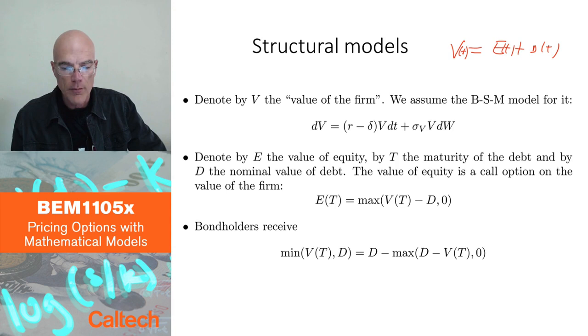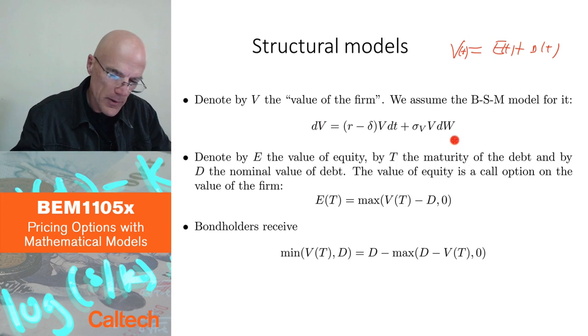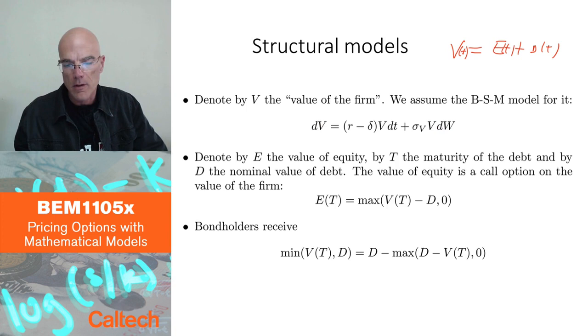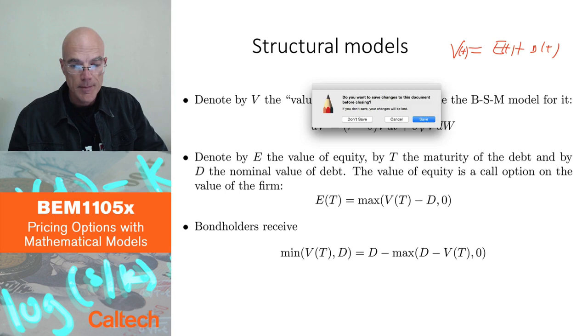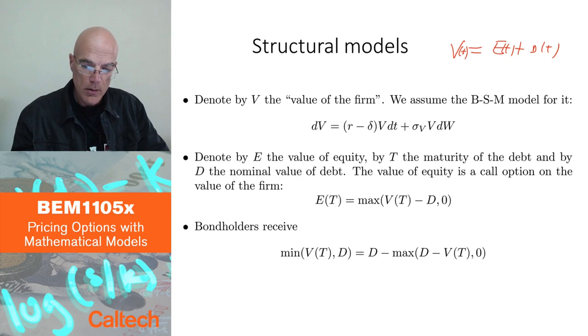So it's kind of an economically nice and intuitive idea for pricing corporate, corporate meaning defaultable bonds. There are problems other than just this being kind of a too simplistic way of view of bankruptcy. There is also a problem that you don't actually observe V. The value of the firm is not directly observable, and it's not quite easy to decide exactly what the value of the firm is. So let's talk a little bit about that problem.